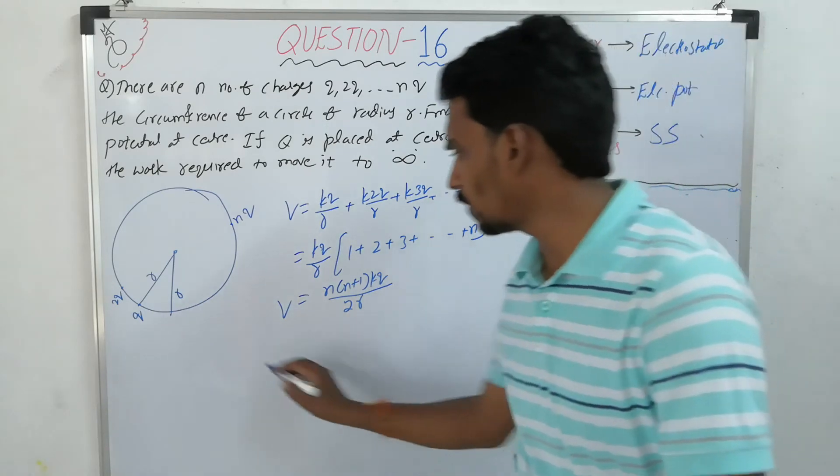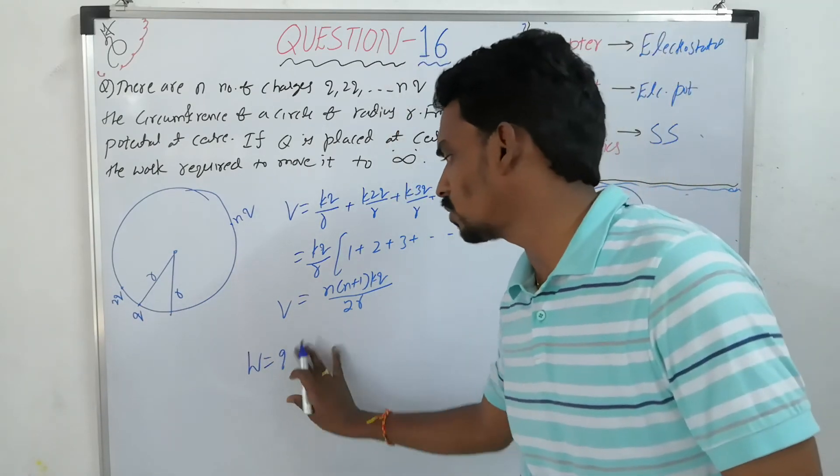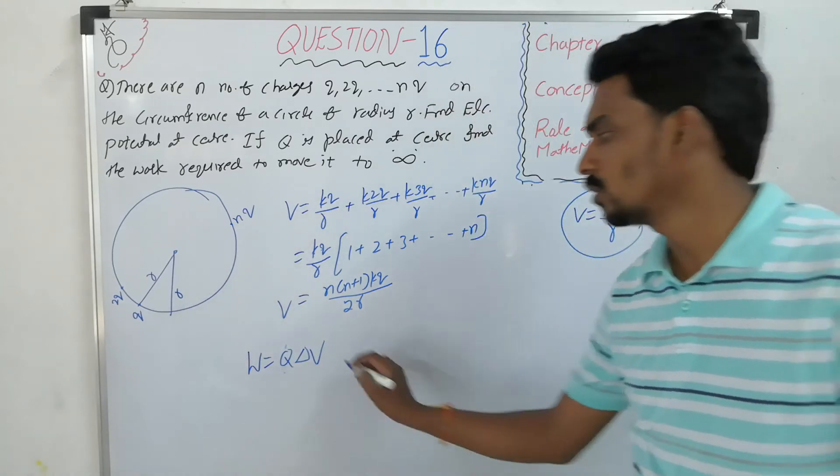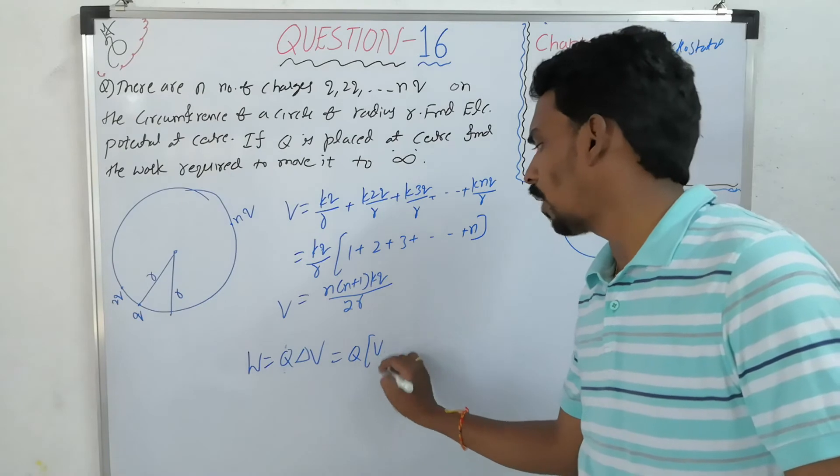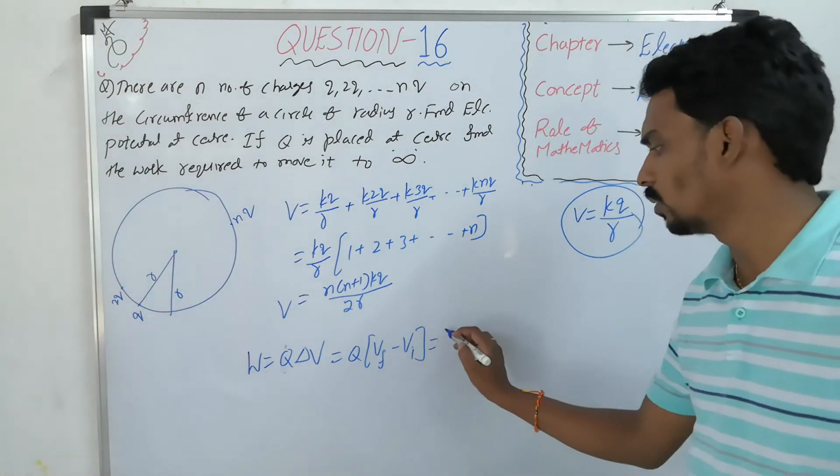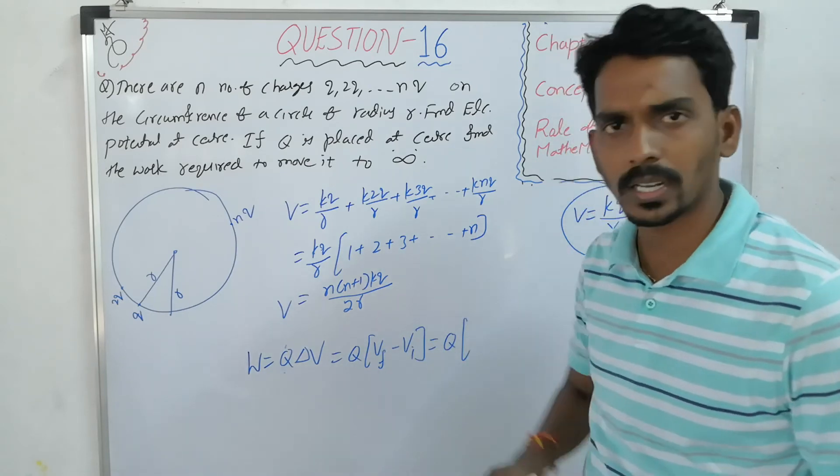Either work required to move from center to infinity or from infinity to center. What is the work done formula? Work done equals charge times the potential difference through which you are moving. So what is the potential difference? Final potential minus initial potential.